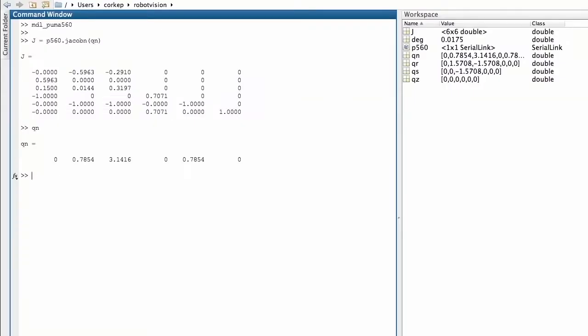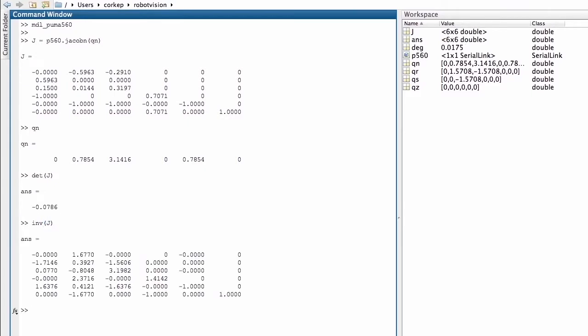Following on from the earlier example, we can test the determinant of the Jacobian matrix for the joint angle configuration QN. And here we can see the determinant and it's not equal to zero. It means I can then invert the Jacobian matrix and this is what the inverse Jacobian looks like.